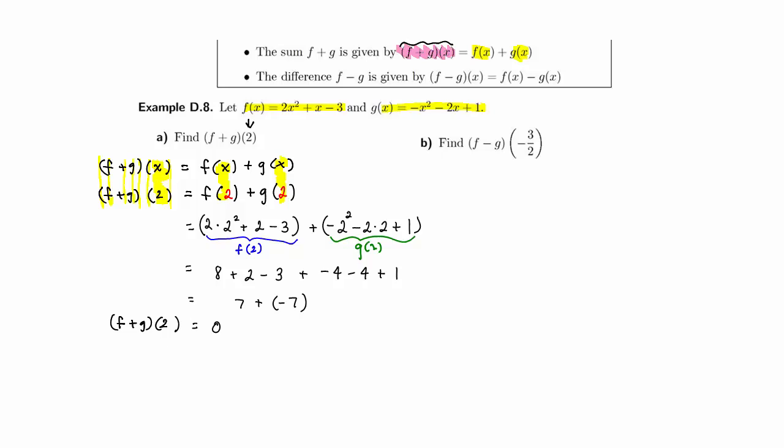Essentially what this is, is an ordered pair where the x value is 2, and the y value is 0 for the new function, f plus g.